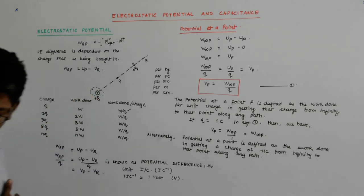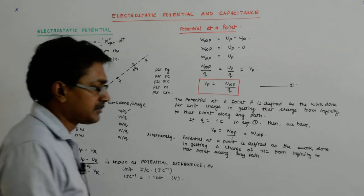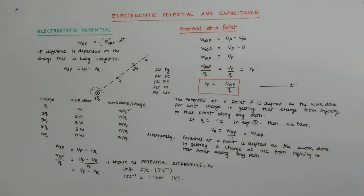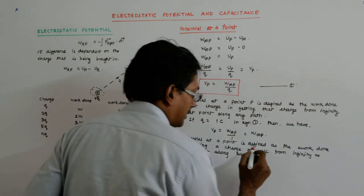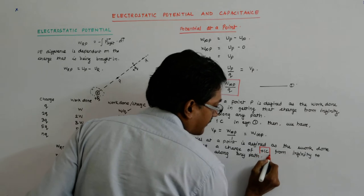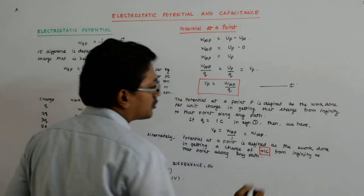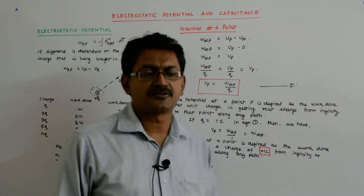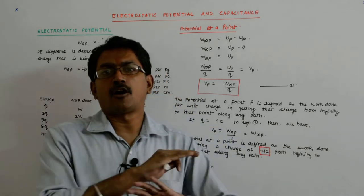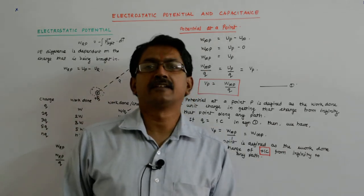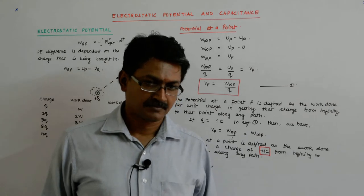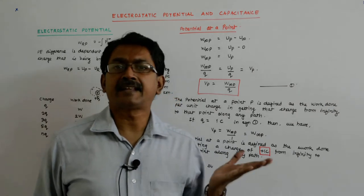Getting a charge of plus one coulomb is not advisable because plus one coulomb is a huge amount of charge and it will distort the electric field. Accordingly, you'll get a different answer. Still, we take it as a concept.